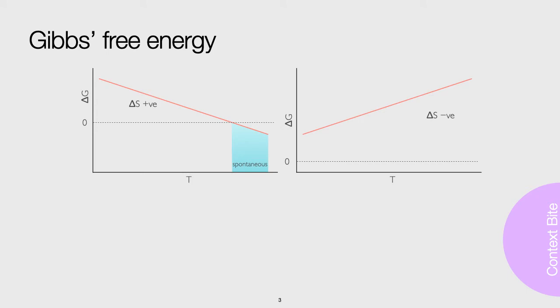If the reaction is endothermic with a negative entropy change, it will never be spontaneous, but you can make this reaction occur if work is done on the system.